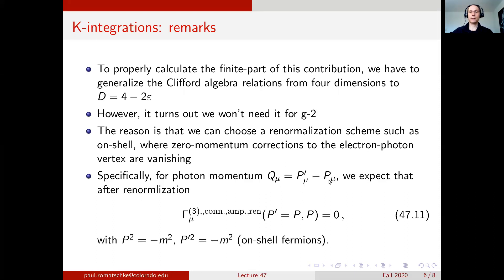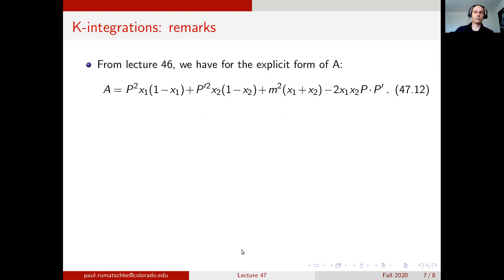If we define the photon momentum as p prime minus p, we can set up a renormalization scheme such that this connected vertex at zero momentum is just zero, where we also put the fermions on shell, so p squared is Euclidean momentum but after analytic continuation we'll have to set it to minus m squared. The explicit form for this factor A can be found if we look up the form of the propagator denominator in lecture 46. If we write 2p dot p prime as minus (p minus p prime) squared plus p squared plus p prime squared, we can identify p prime minus p as q, so we get minus q squared. If we are on shell, then p squared and p prime squared both are minus m squared, so we get minus q squared minus 2m squared.